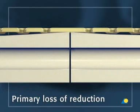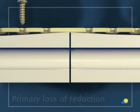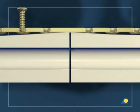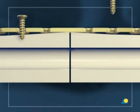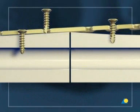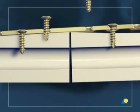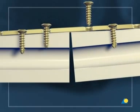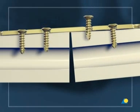Primary Loss of Reduction: When using conventional screws, it's essential to contour the plate precisely to the bone surface. Otherwise, the tightening of the screws will lead to a primary loss of reduction.